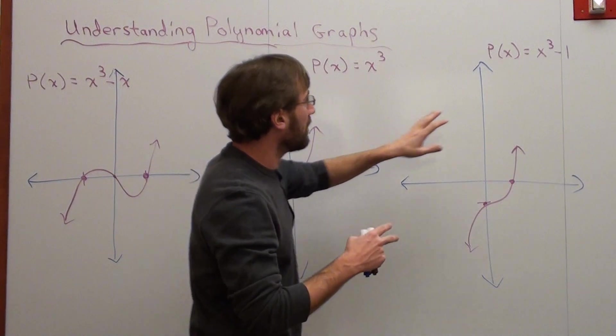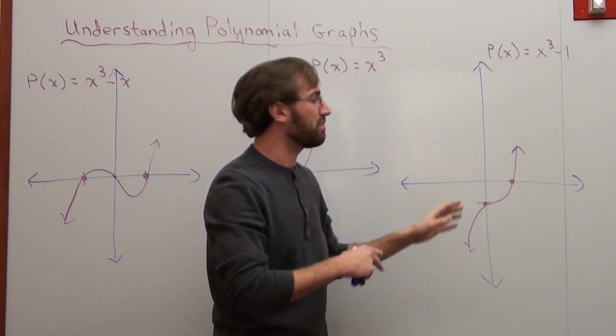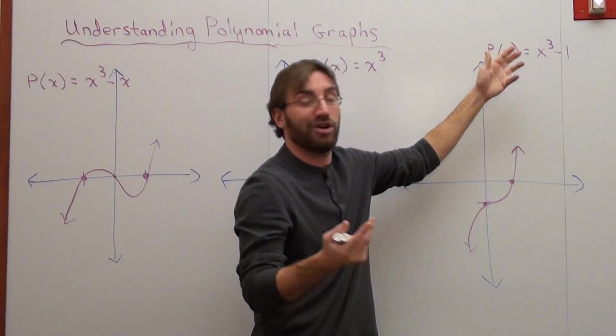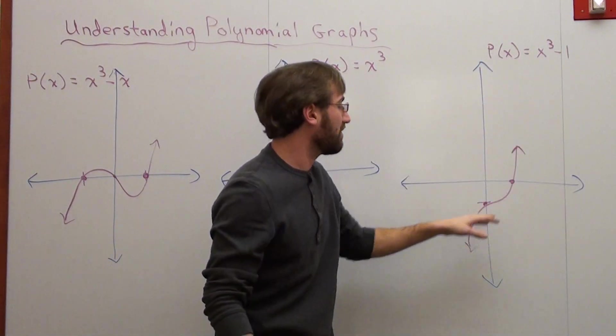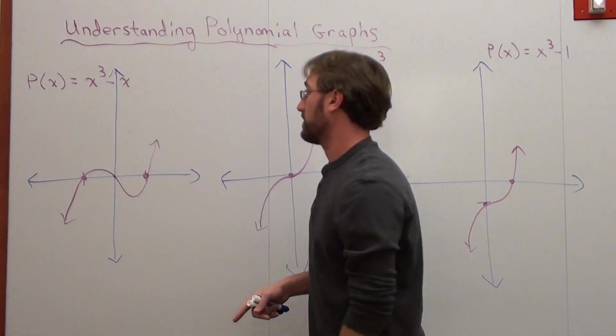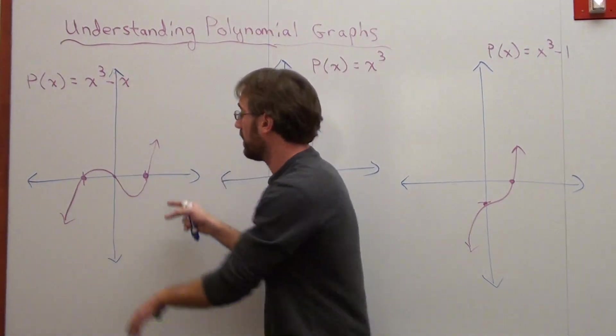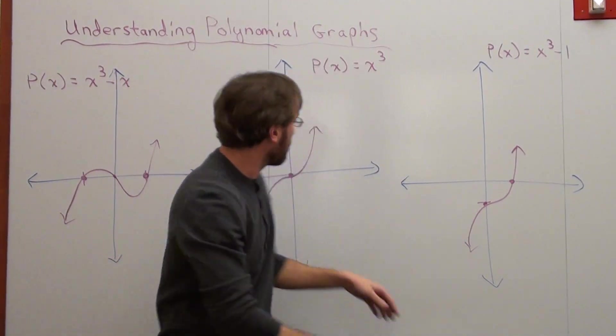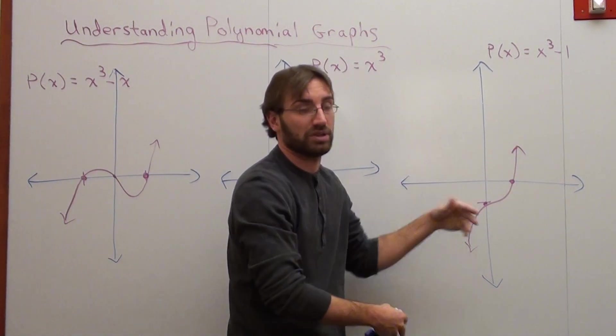And I know they're all positive graphs because the leading coefficient is positive, or because the right side of the graph goes up. If the right side of the graph goes down, then it's a negative graph. But all of these are odd graphs. You can look at the leading degree three—three is an odd number—or if one arrow points one way and one arrow goes the other way, it basically just means it's an odd function, or polynomial in these cases.